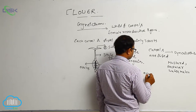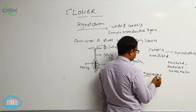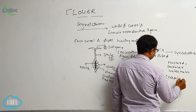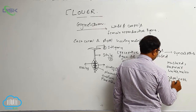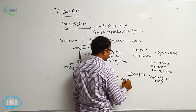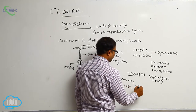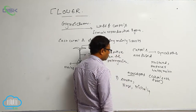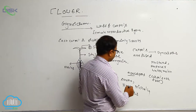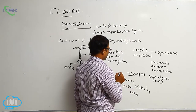Apocarpous means carpels are free. That is known as the apocarpous condition. In apocarpous condition, examples are Anona, Rose, Michelia, and also Lotus. All of these are examples of apocarpous condition.